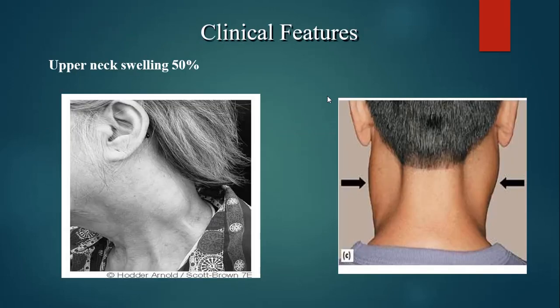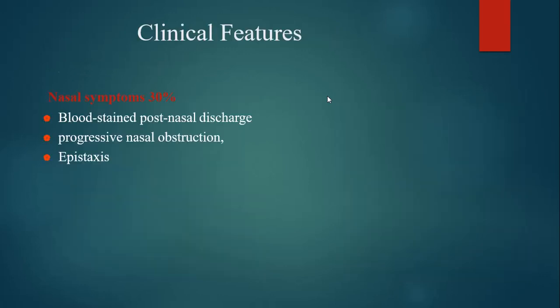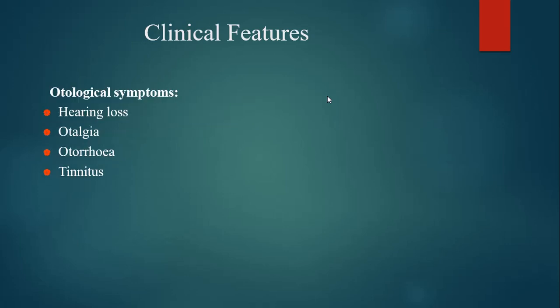What are the clinical features with which patients present? About 50% of patients present with upper neck swelling due to enlarged cervical lymph nodes. Other symptoms include bloodstained post-nasal discharge, progressive nasal obstruction, and epistaxis. Ear symptoms include hearing loss, otalgia, otorrhea, tinnitus, and frequent serous otitis media due to involvement and blockage of the Eustachian tube.